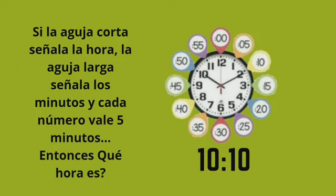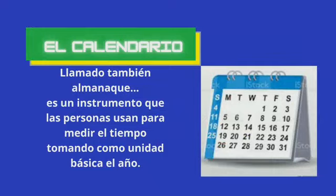La aguja pequeña indica hacia el número diez, por consiguiente marca que son las diez horas. Vamos a ver cuántos minutos han transcurrido de esas diez horas. La aguja larga marca el número dos. Si contamos de cinco en cinco, al número dos le corresponde el diez. Efectivamente, son las diez y diez.